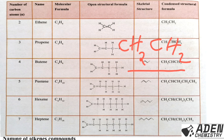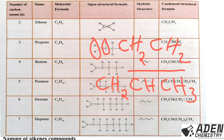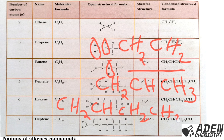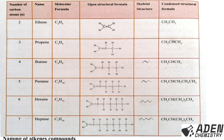For propene, check the open structural formula: the first carbon is linked to two hydrogen atoms, the second carbon has only one hydrogen, and the third carbon has three hydrogen atoms. For butene: the first carbon has two hydrogen, the second has one hydrogen, the third has two hydrogen, and the fourth has three hydrogen atoms. This is how we use the open structural formula to derive the condensed structural formula.